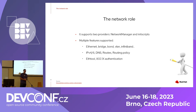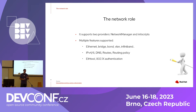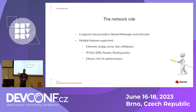So the network role supports two providers: one is NetworkManager, and the other provider is init scripts. We are going to forget about init scripts, let's focus on NetworkManager. And it supports a lot of features — for example, a lot of interface types like Ethernet, VLAN, bond, bridges, and a lot of them. IPv4 and IPv6 address configuration, DNS configuration, routes, routing policy, DNS option configuration, and some other utilities like 802.1x authentication and wireless.